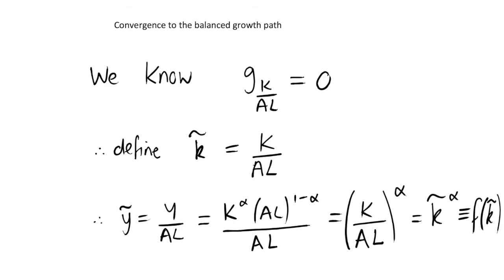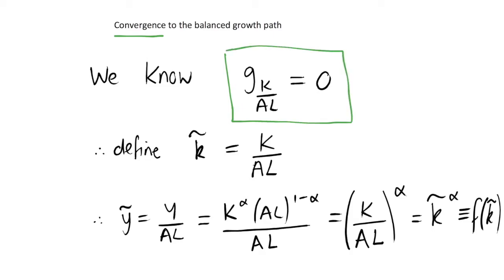In the previous video we established the growth rates of a number of variables on a balanced growth path in the Solow model. In this video we're looking at convergence to this balanced growth path — do we tend to move towards this balanced growth path as an equilibrium, or do we need to change some policies to get there? For example, when we looked at the golden rule steady state of the Solow model, we had to change our savings rate to get there.